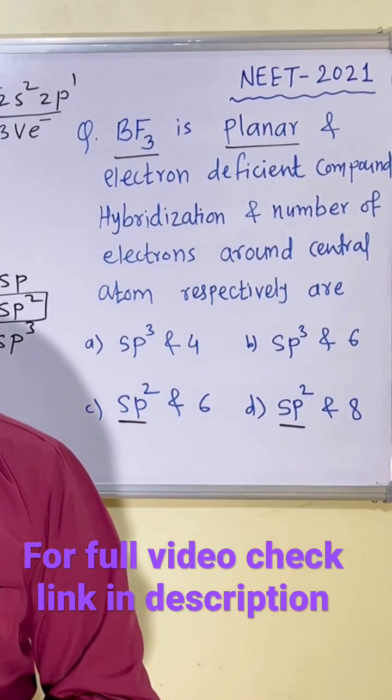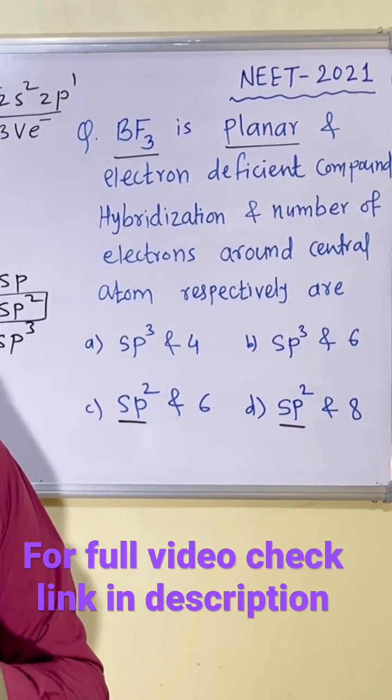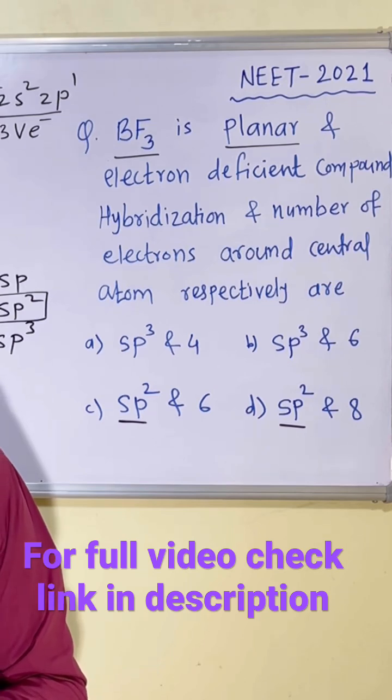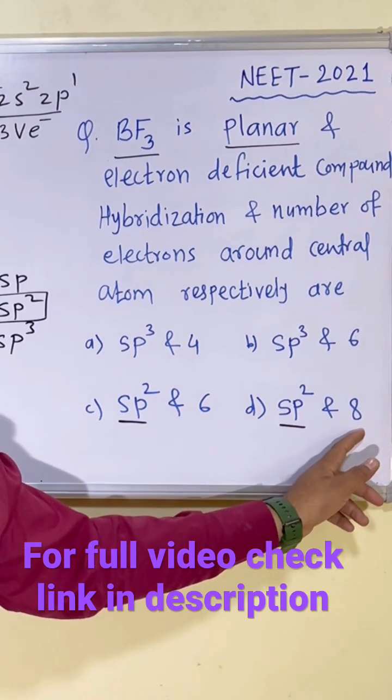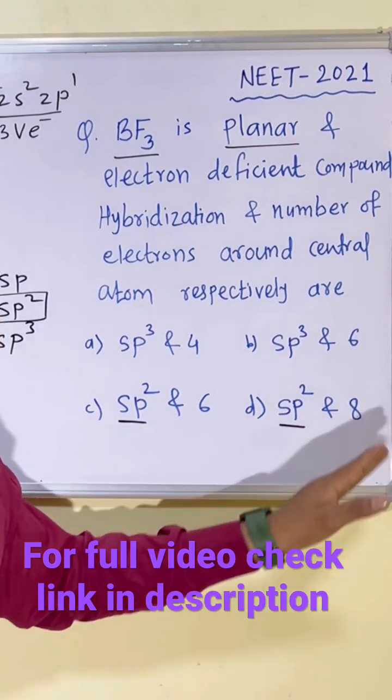The central atom is having electron deficient species, which means it does not complete the octet. The octet is not completed. Therefore, you can simply see here we have eight electrons. That is complete octet. We can call such molecule as electron precise molecule.